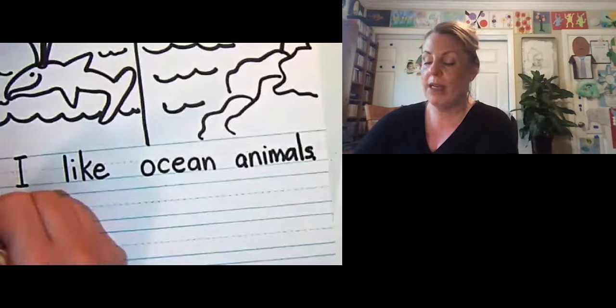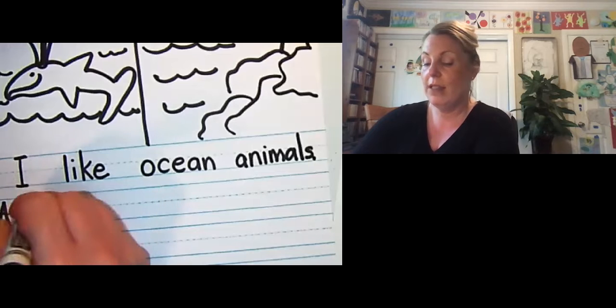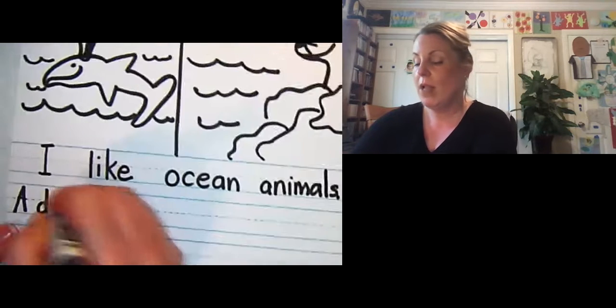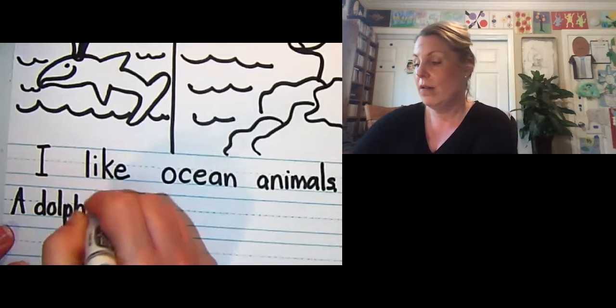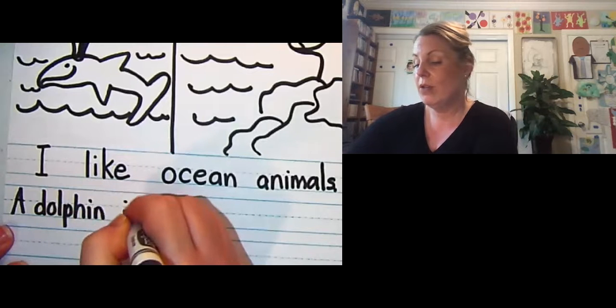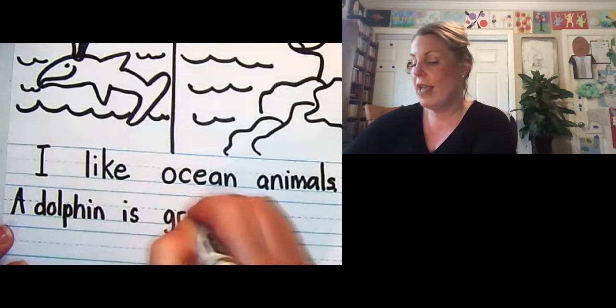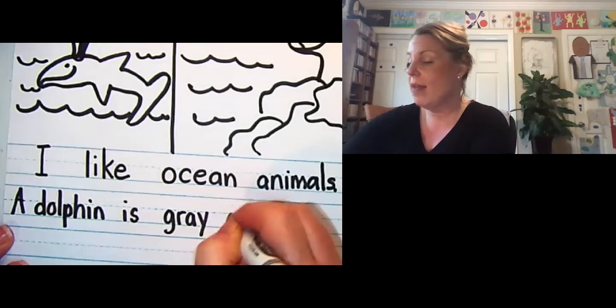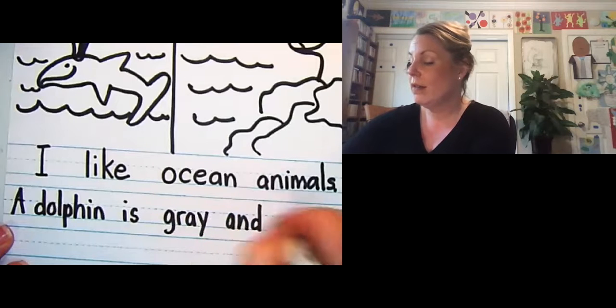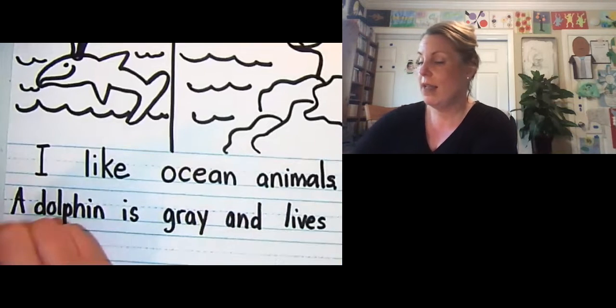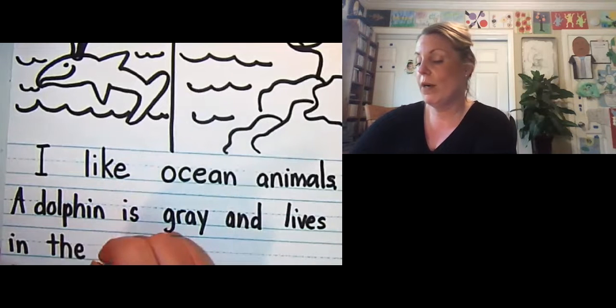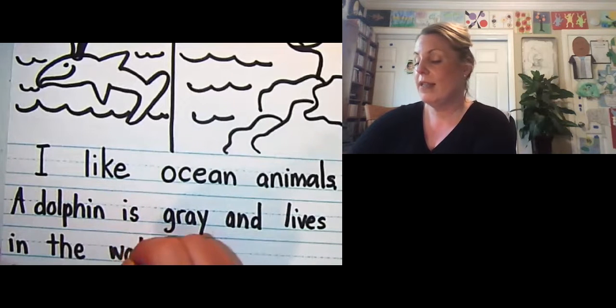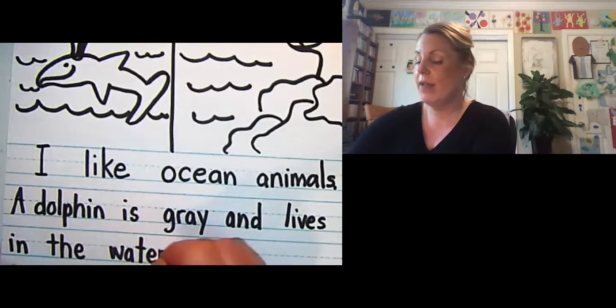And now I'm gonna say a dolphin. Now let's describe my first animal. A dolphin is gray. G-R-A-Y. And lives in the water. W-A-T-E-R. Okay.